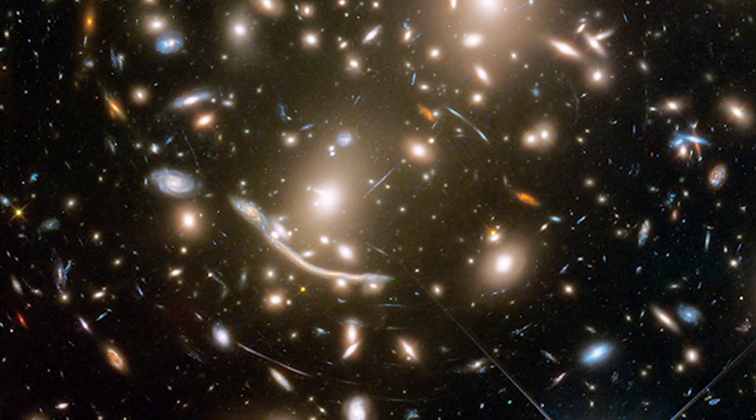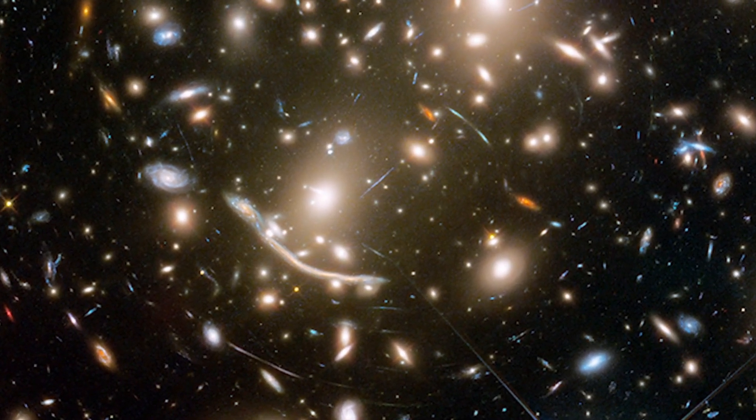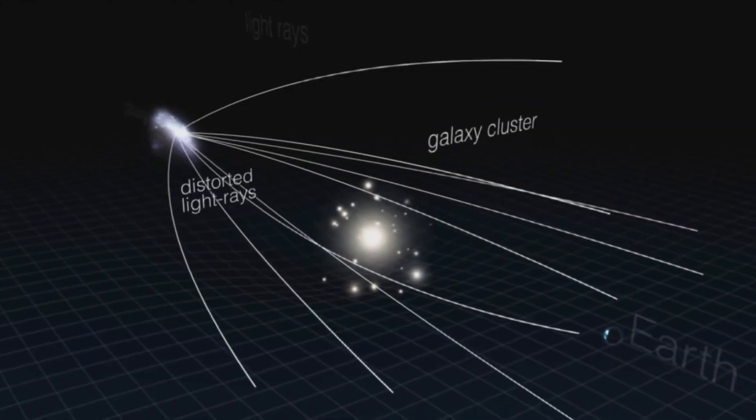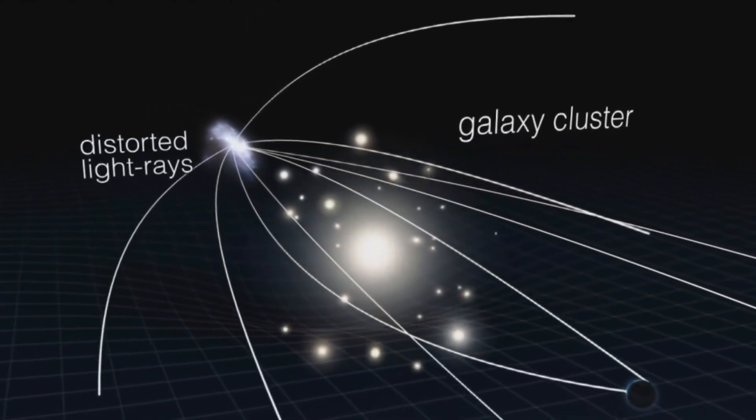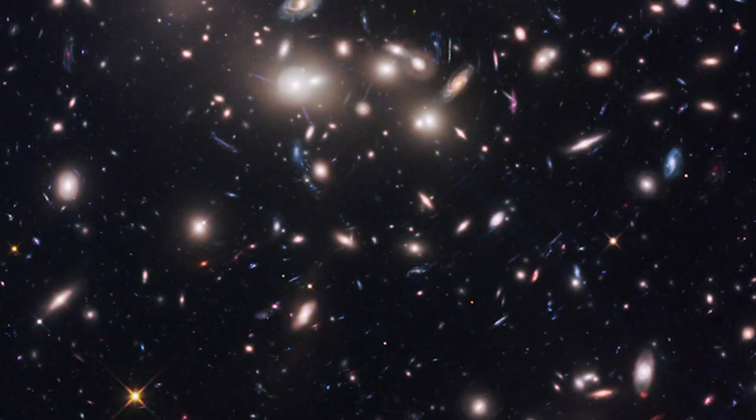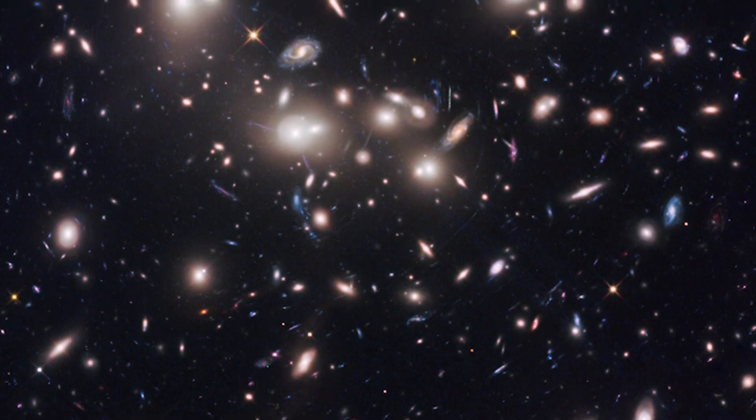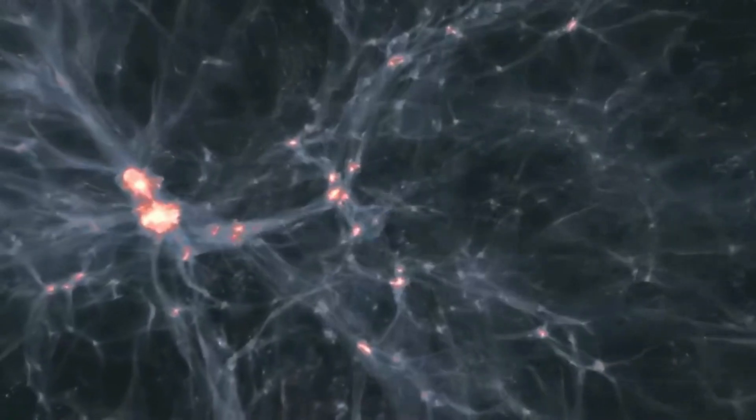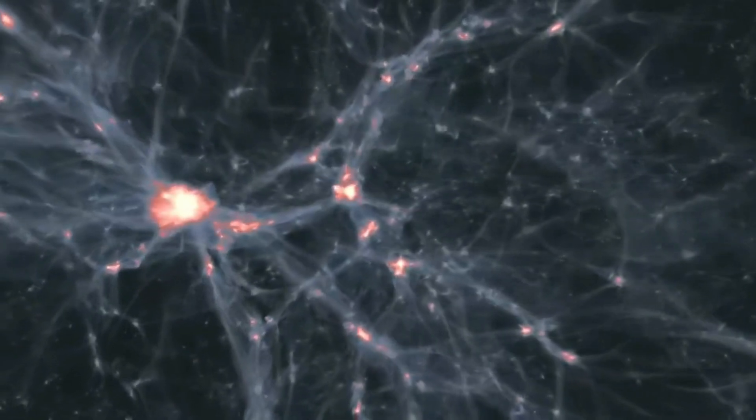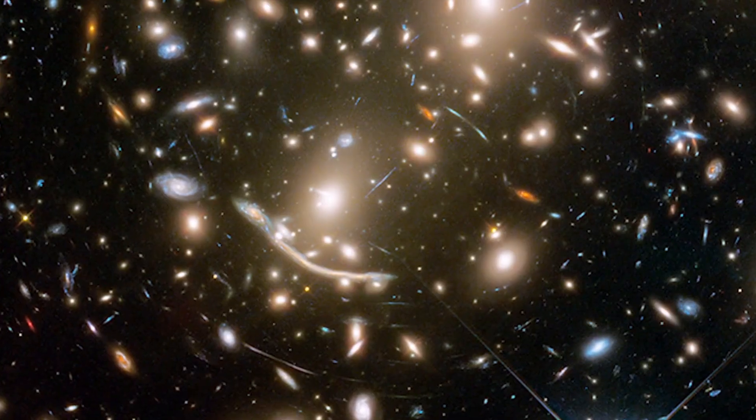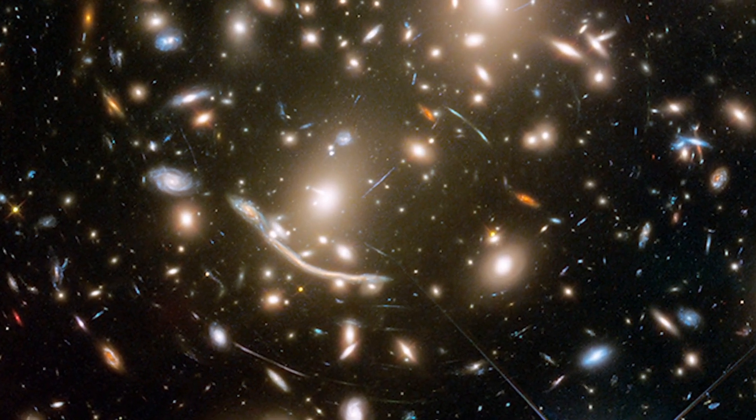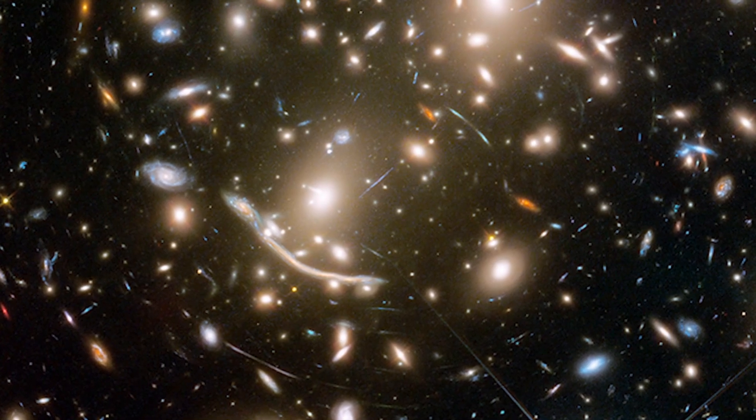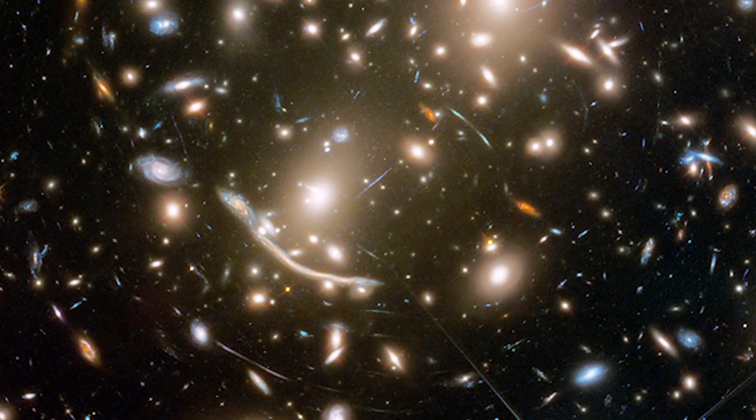One of the most promising techniques for furthering this research is gravitational lensing. This phenomenon occurs when light from distant galaxies is bent around massive objects, such as clusters of galaxies, due to their immense gravitational fields. By studying the distortions in the light, scientists can map the distribution of both visible and dark matter. This method allows researchers to probe the structure of the cosmic web in unprecedented detail, uncovering the hidden scaffolding of the universe.